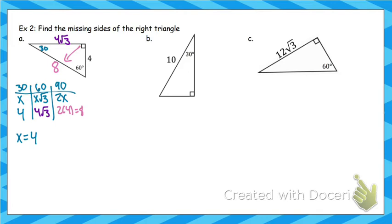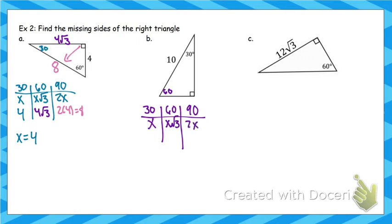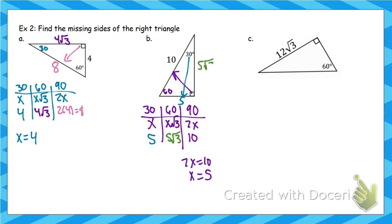Let's look at example B for 30-60-90. This one's also simpler. Chart: 30, 60, 90, with x, x√3, 2x. Across from 90 is 10, so 2x equals 10, meaning x equals 5. Plugging in: across from 30 is 5, and across from 60 is 5√3.